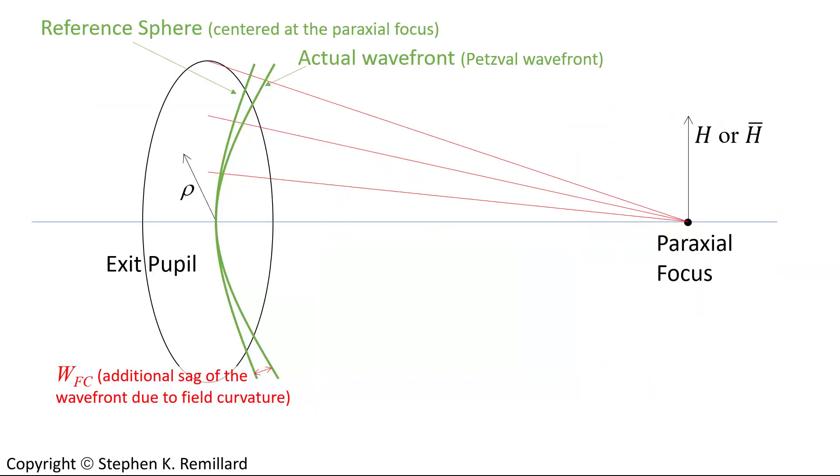Taking a close-up look at the exit pupil of any optical system, where rho is the normalized radial coordinate inside the exit pupil, and out on the paraxial focus, where the image forms, you have H, which is the normalized field coordinate on the image surface, or on the object surface. A bar is put above the H when that coordinate is referring to the chief ray, and when there is no bar above the H, the coordinate is referring to a marginal ray.